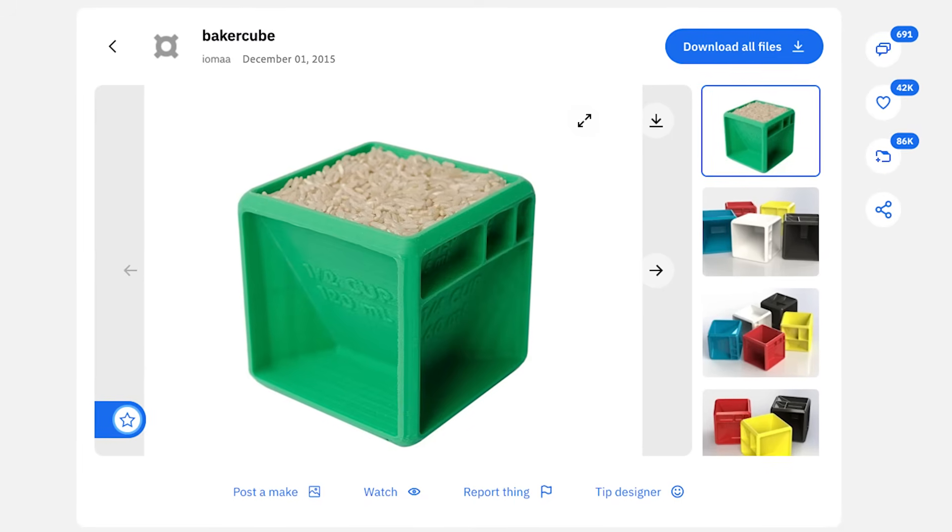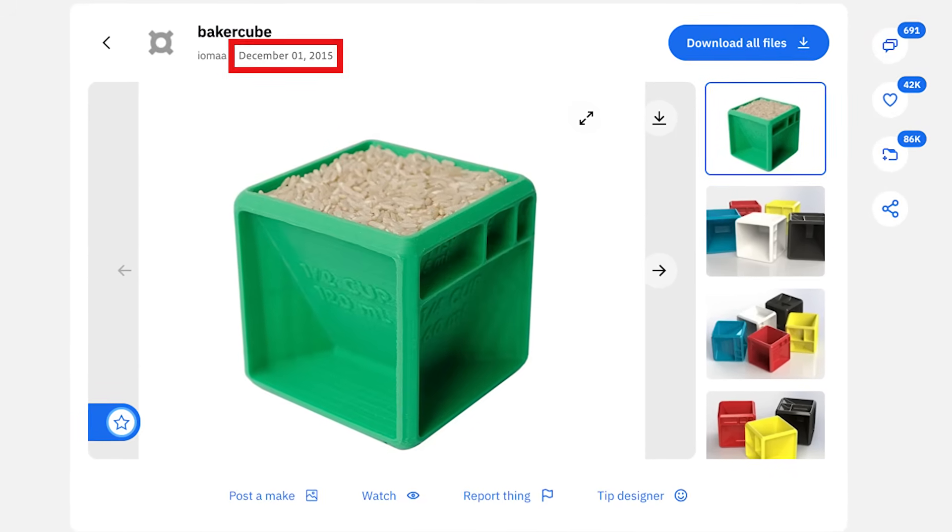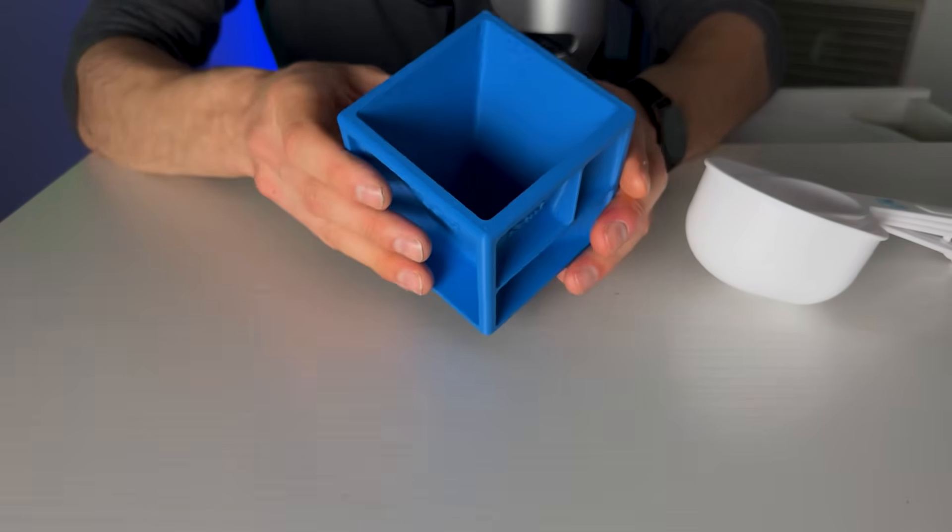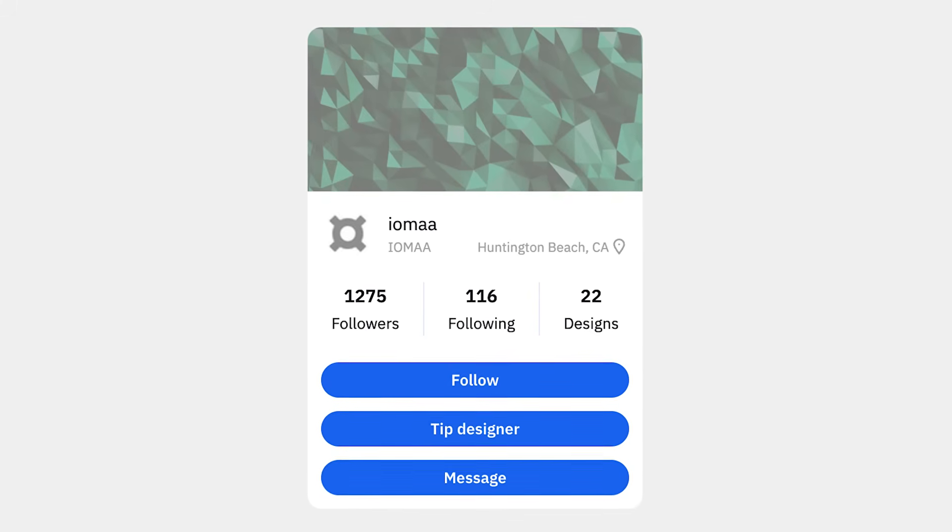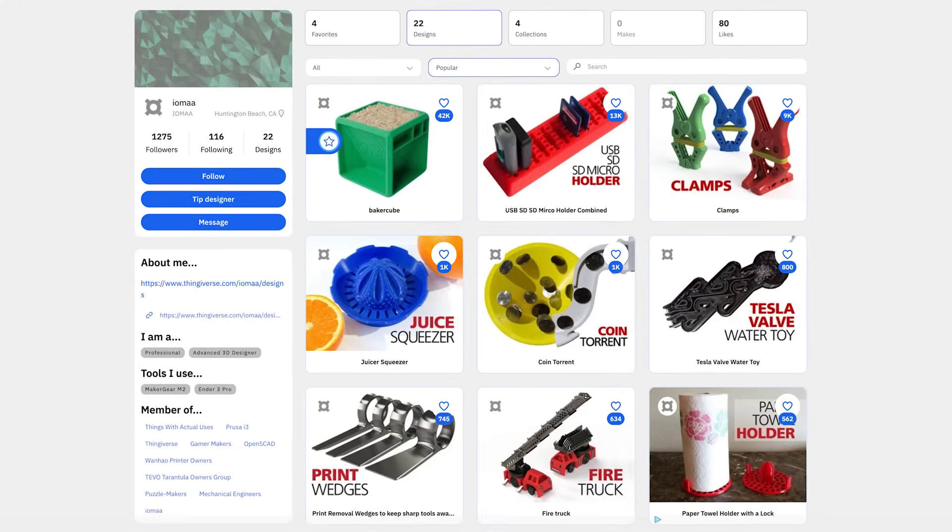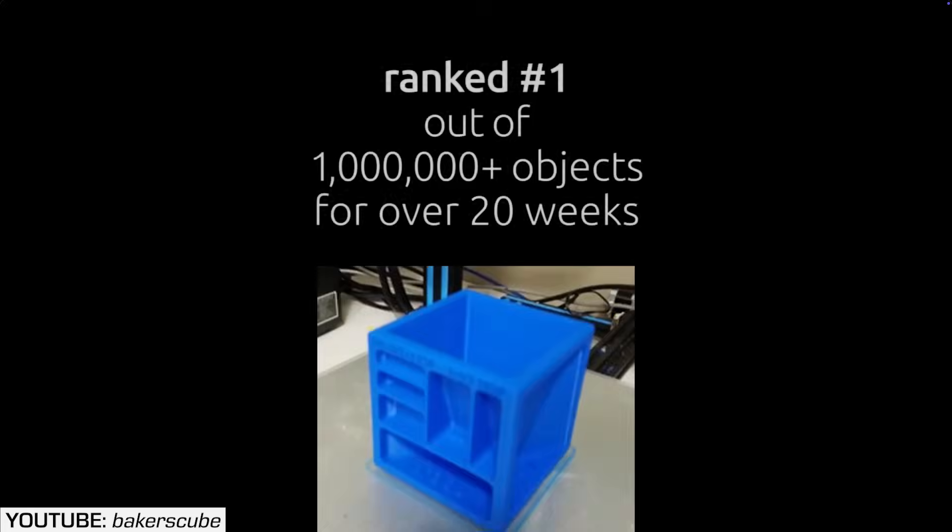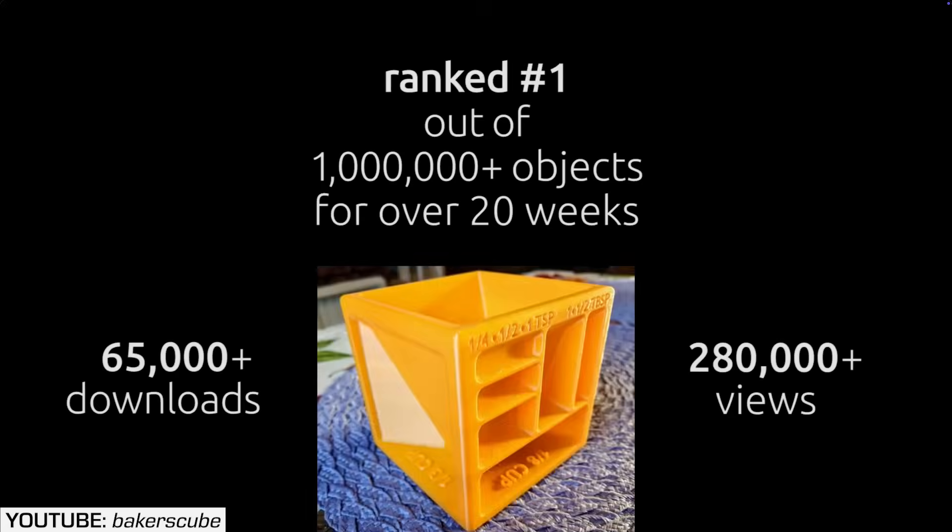This might be the perfect 3D printed part, but it's not new. It was actually designed 10 years ago. So why haven't you seen it? This is the Baker's Cube, designed in 2015 by a small design group making files for Thingiverse when all files were given away for free. It became the number one download on Thingiverse for many months back in 2015 when 3D printing was a lot smaller.